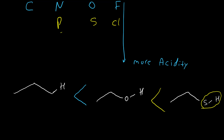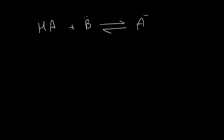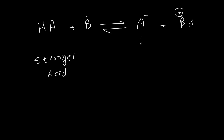It is the same with nitrogen and phosphorus. So if we have NH2 or PH2, the one with phosphorus is more acidic. Being a strong acid means the conjugate base A⁻ should be more stable. So a stronger acid has a more stable conjugate base.